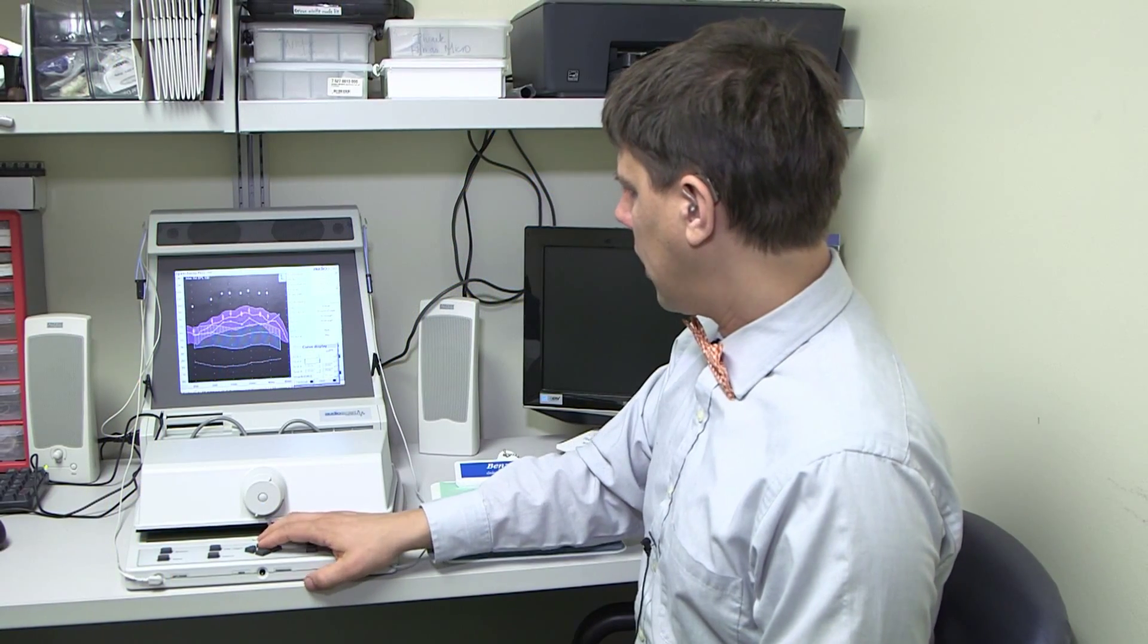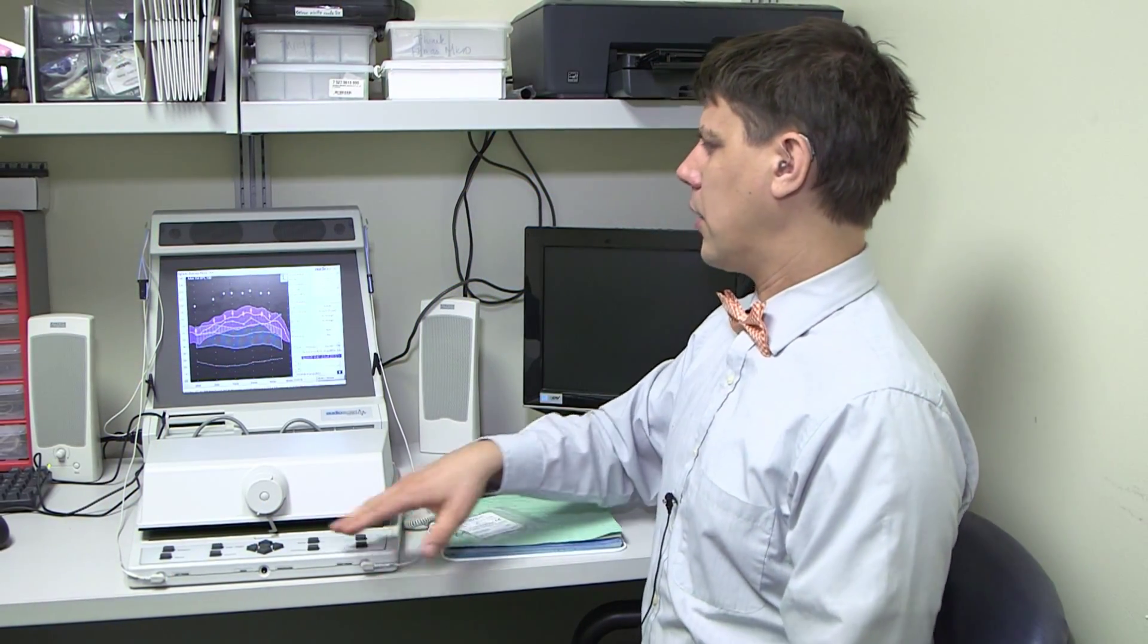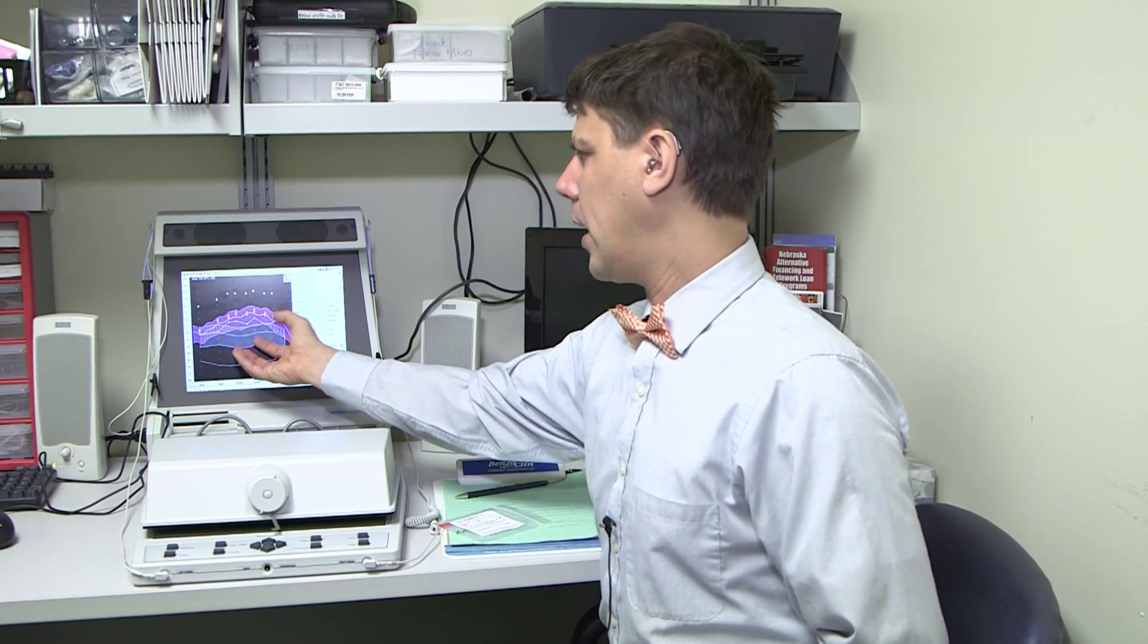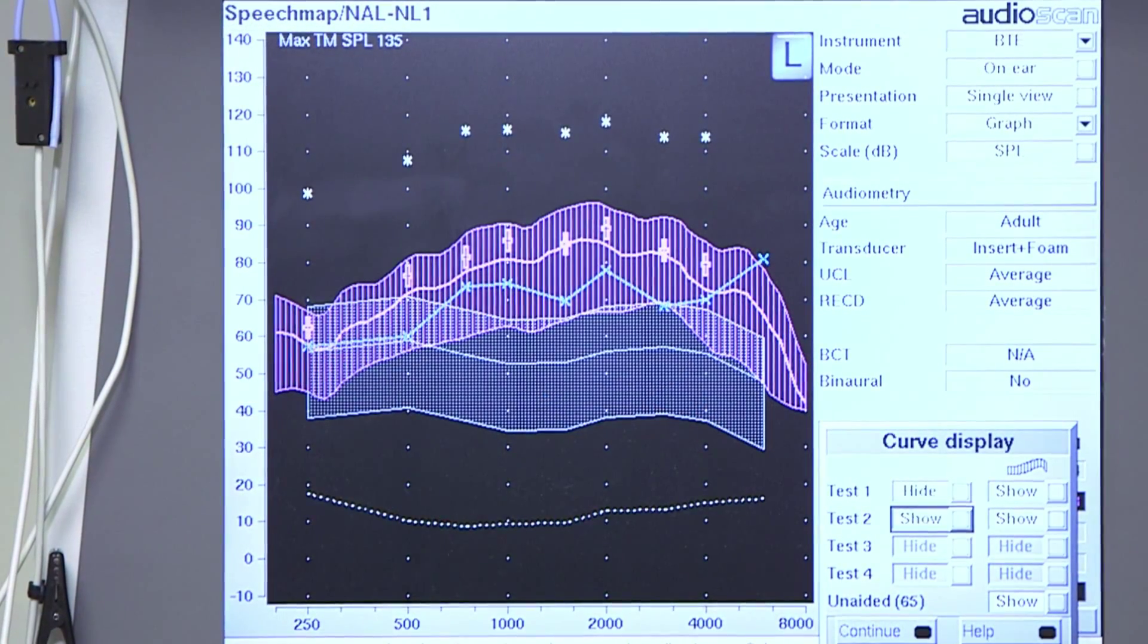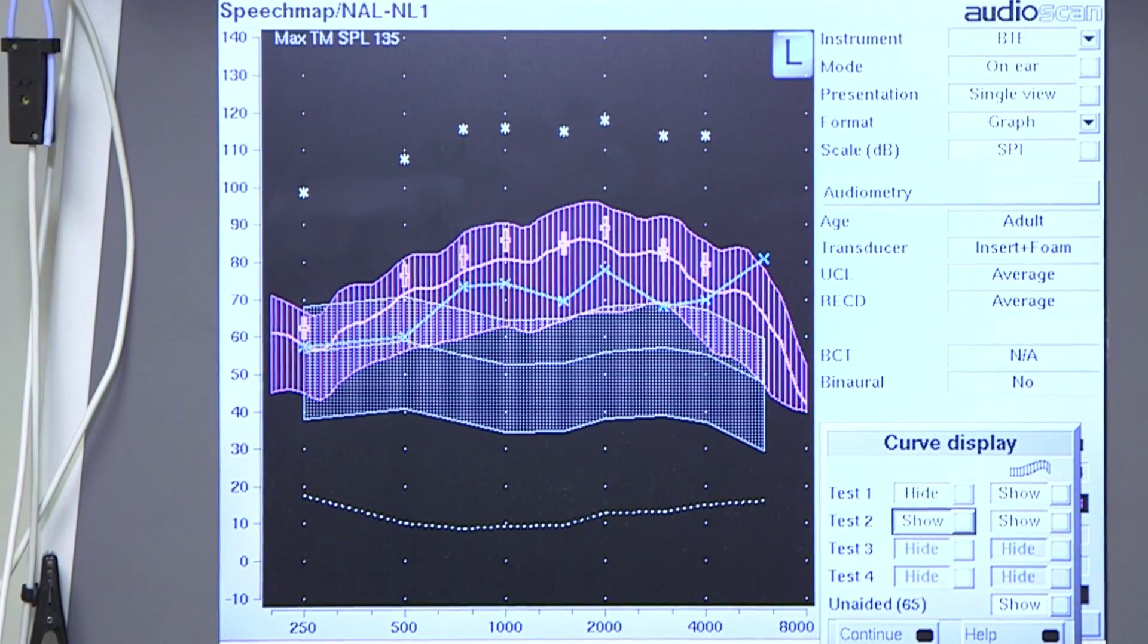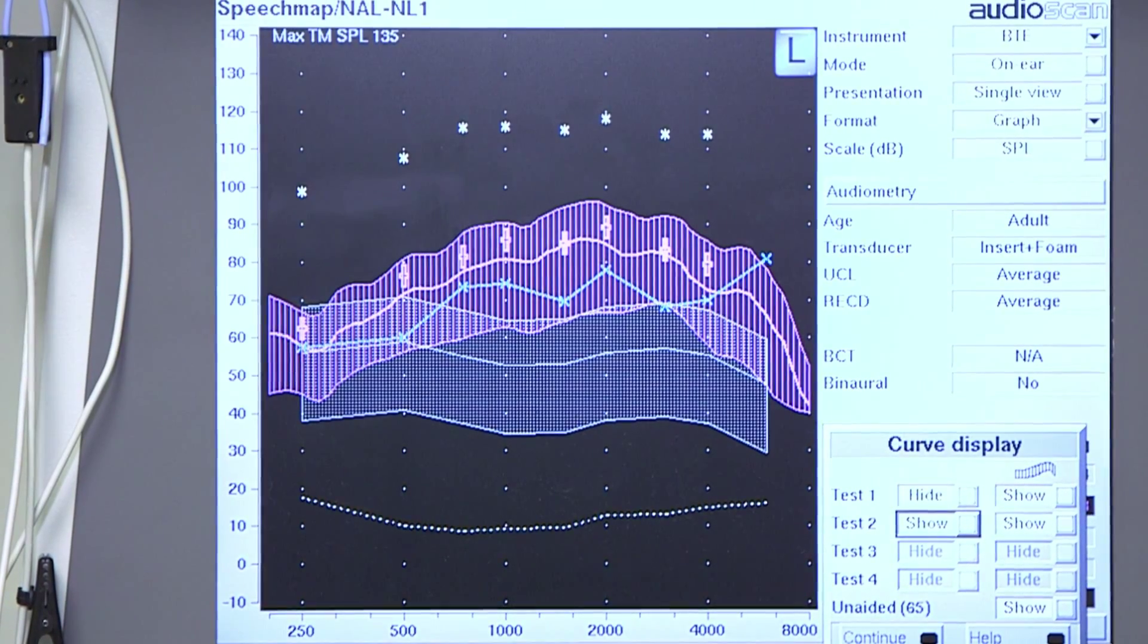So once we've done that then we get a plot that looks like this where we've taken the white hatched area and through the hearing aid we're making speech louder now and it's as loud as what's shown in this purple hatched area. And that's how we can determine that the hearing aid is set appropriately for that person's hearing loss.